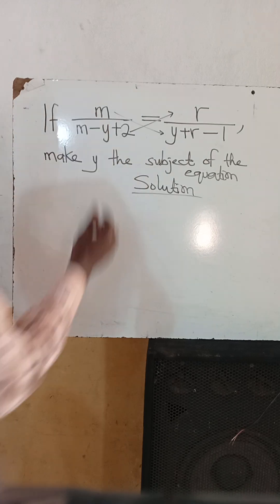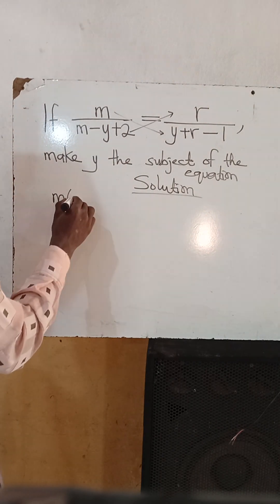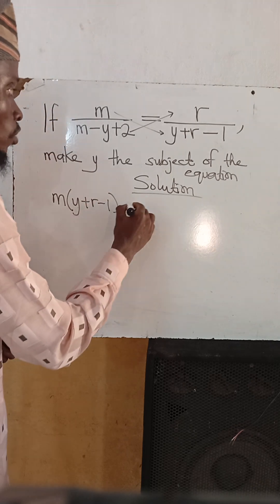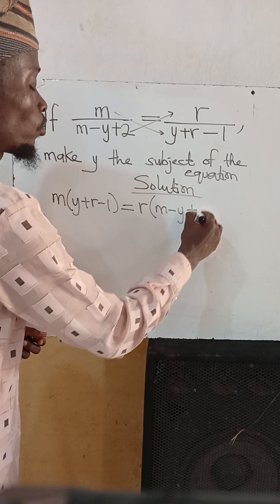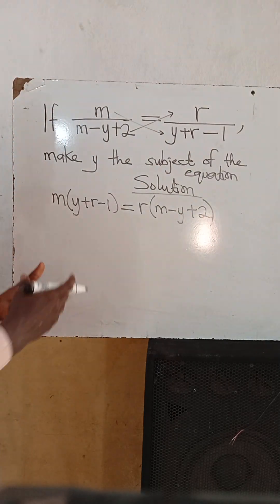Let's cross multiply. This means that we have m into bracket y plus r minus 1 is equal to r into bracket m minus y plus 2. The next step is to open the brackets.